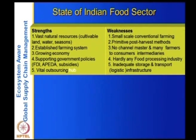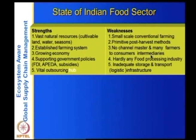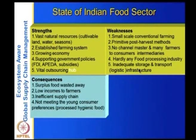The weaknesses include: small-scale conventional farming, primitive post-harvest methods, no channel master, too many intermediaries between farmers and consumers, hardly any food processing industry, and inadequate storage. Some of these weaknesses need to be addressed by researchers, companies, and education institutions. Some must be business-oriented — for example, contract farming could help, but there are fears that small farmers may be commoditized.